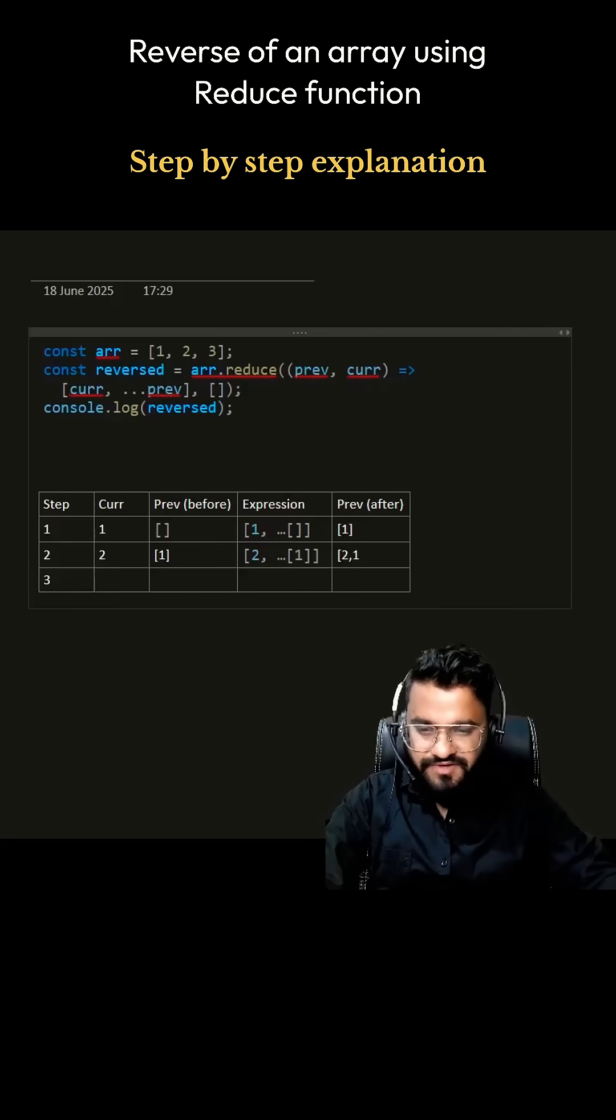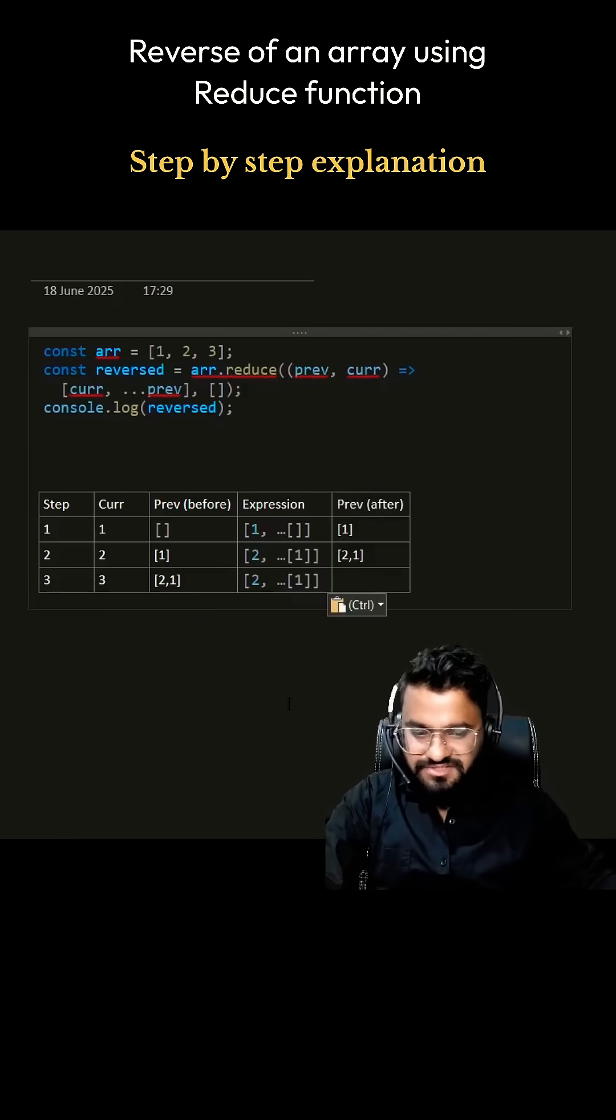Now if you come to step 3, where current value will be 3, previous value is this 2 comma 1, so array with 2 comma 1. Now how your expression will look like? So this will be your current value and previous value is 2 comma 1. Your new array will look like 3 comma 2 comma 1.